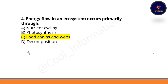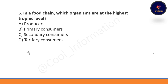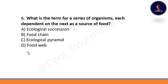In a food chain, which organisms are at the highest trophic level? Is it primary consumer, secondary consumer, or tertiary consumer? Tertiary consumers are at the highest trophic level. Option D is correct.